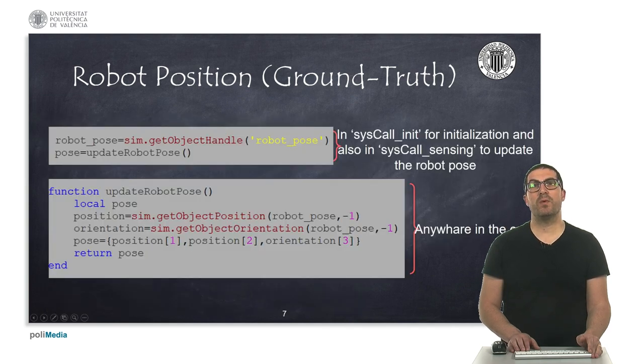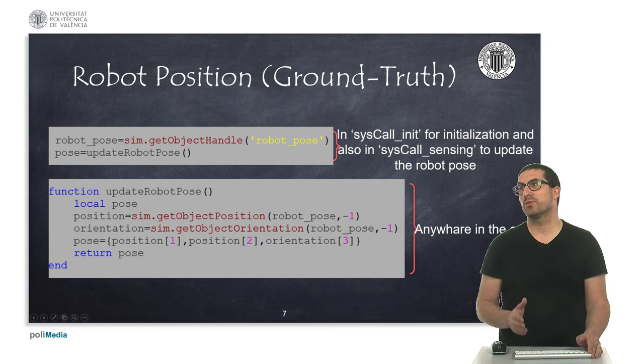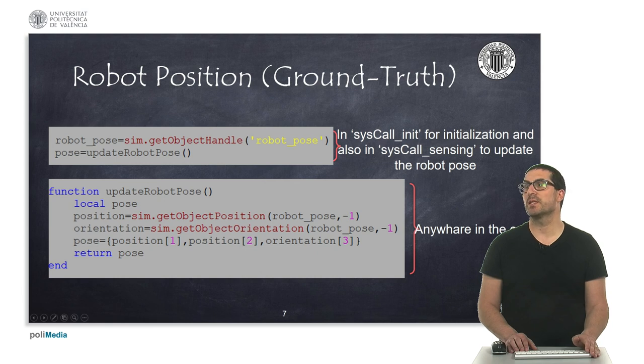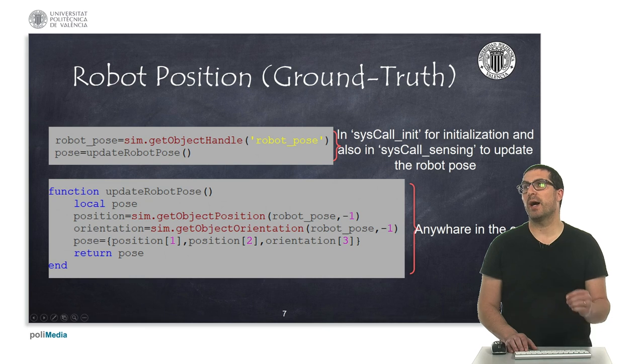So, to access to the robot position, we will need to implement this simple code. On the one hand, you need to access, or to get the handle of the object that I previously, or that we previously created. In this case, it's the robot pose. And also, to create or to initialize a variable called pose. That will provide us with the actual or the initial robot pose.